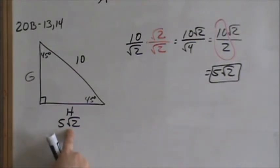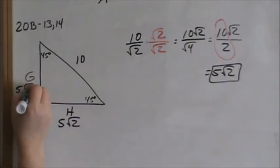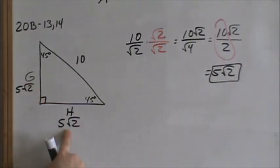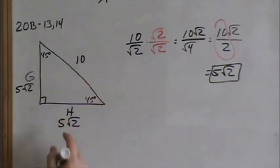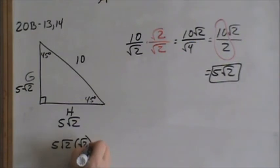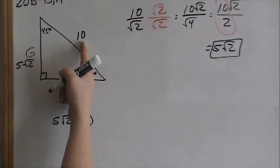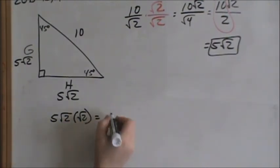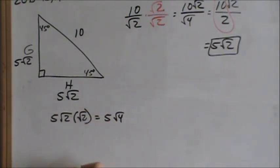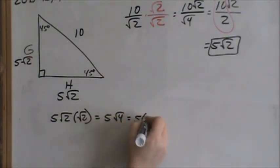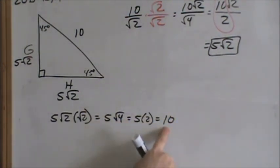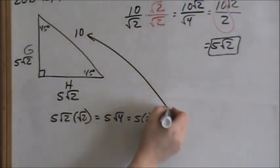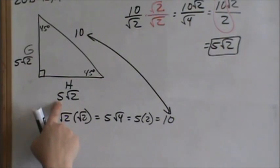If one leg is 5 square root of 2, it's an isosceles triangle, so the other leg is also 5 square root of 2. You can always go backwards to check your answer. How do we go from the leg to the hypotenuse? We multiply by square root of 2. So take the leg 5 square root of 2 and multiply by square root of 2. Numbers to numbers and radicals to radicals: that would be 5 times square root of 4, and square root of 4 is 2, so that's 5 times 2 which is 10. We did get the original hypotenuse, so that tells us our answer for the leg is correct.